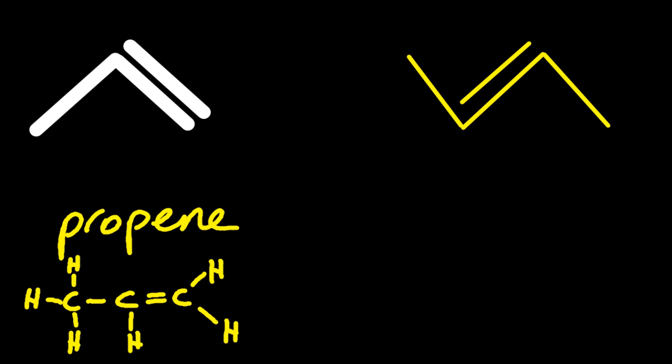What about these two? That's propene. You can see how the double bond is shown. And butene. Well, actually, that's trans-butene. Because the bonds are across from each other. The methyl bonds are across from each other.